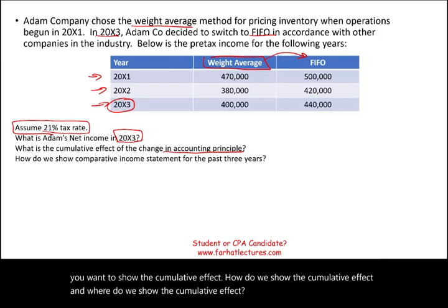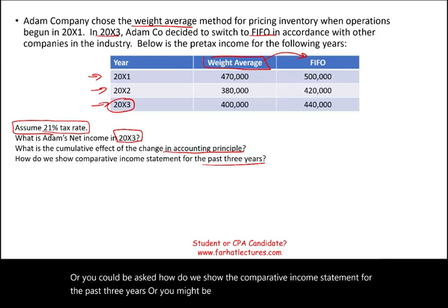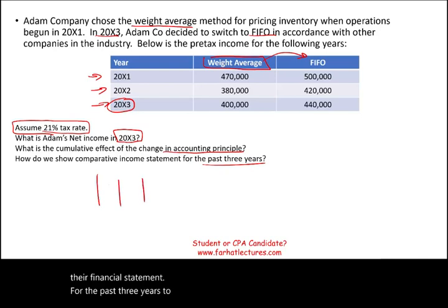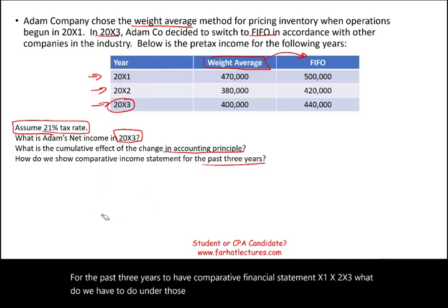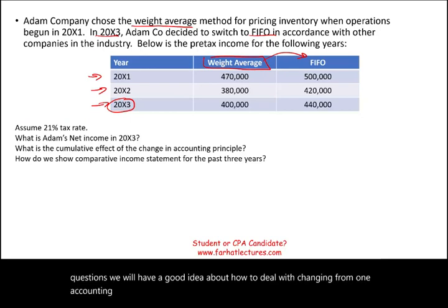You could also be asked how to show the comparative income statement for the past three years. Or, if they want to republish their financial statements for years X1, X2, and X3 as comparative financial statements, what do we have to do? By answering these three questions, we'll have a good understanding of how to deal with changing from one acceptable GAAP accounting principle to another.